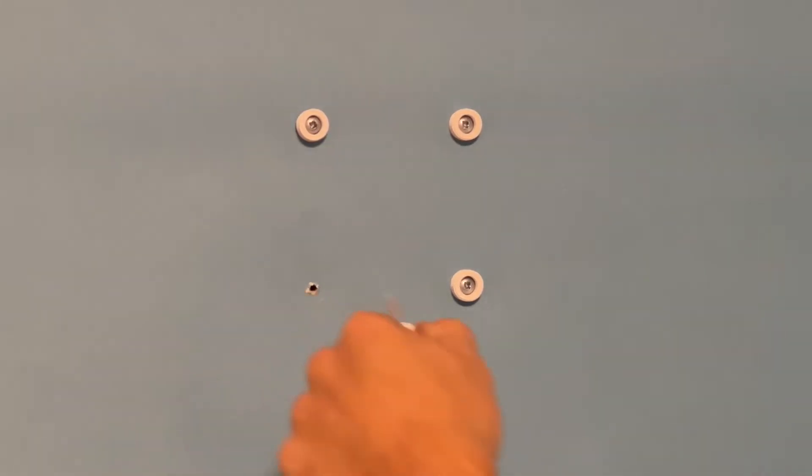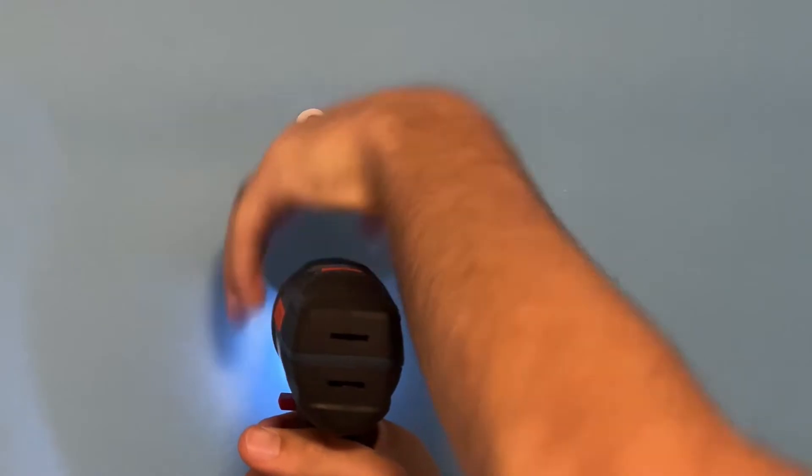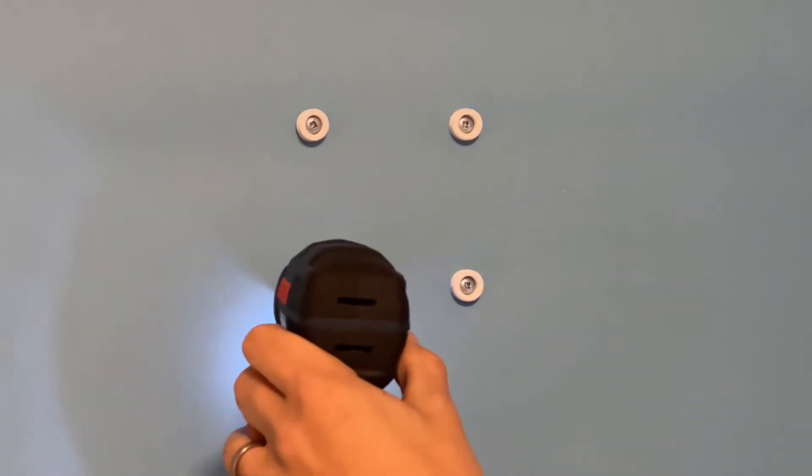Using whichever wall mounting method that you want, screw the wall anchors into the wall. Here I just have pre-drilled holes and I'm screwing directly into the drywall, and it's strong enough to hold the escapement up.